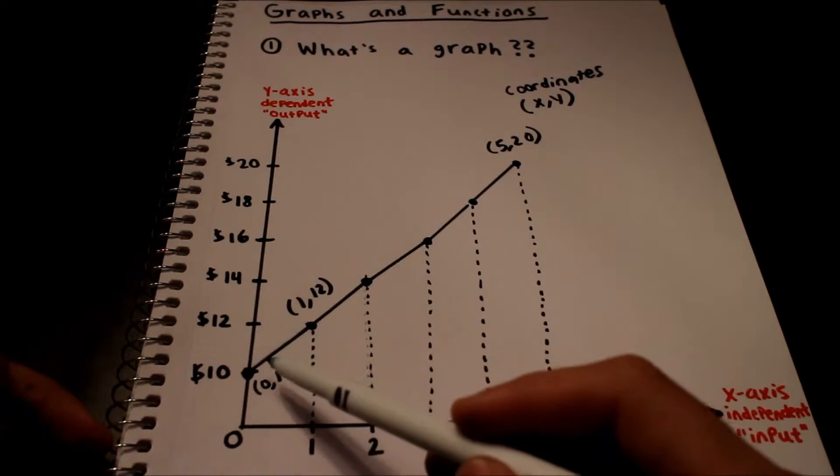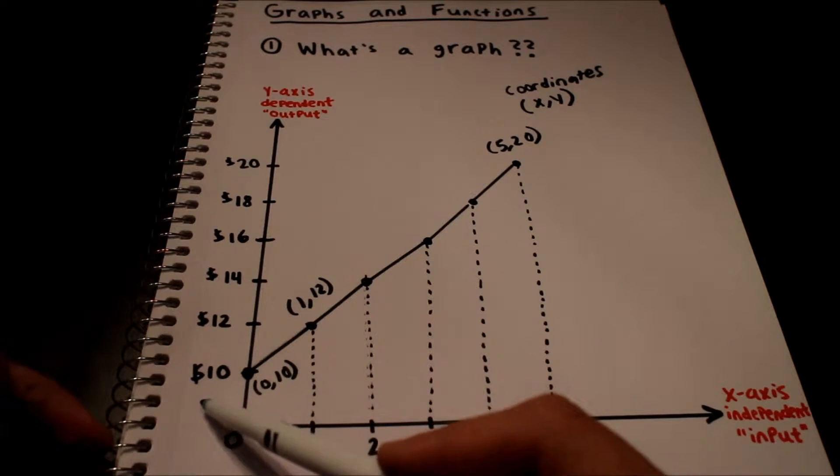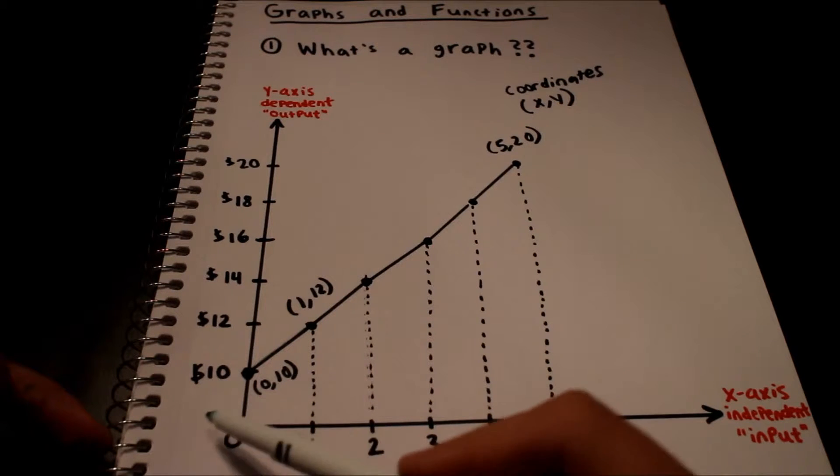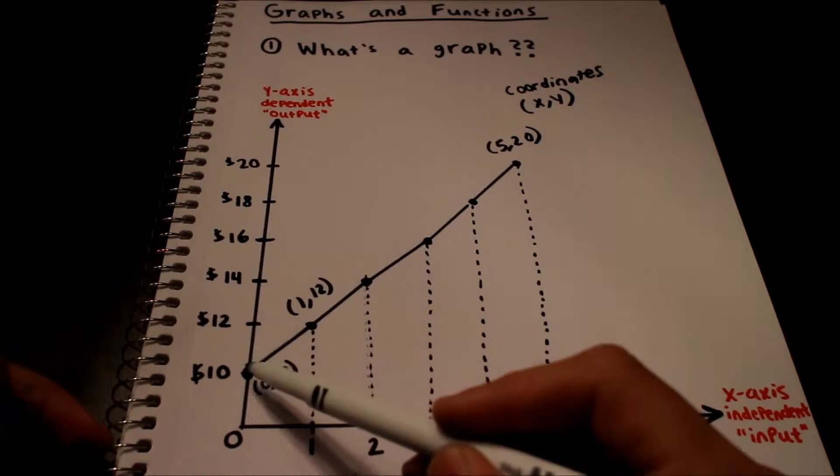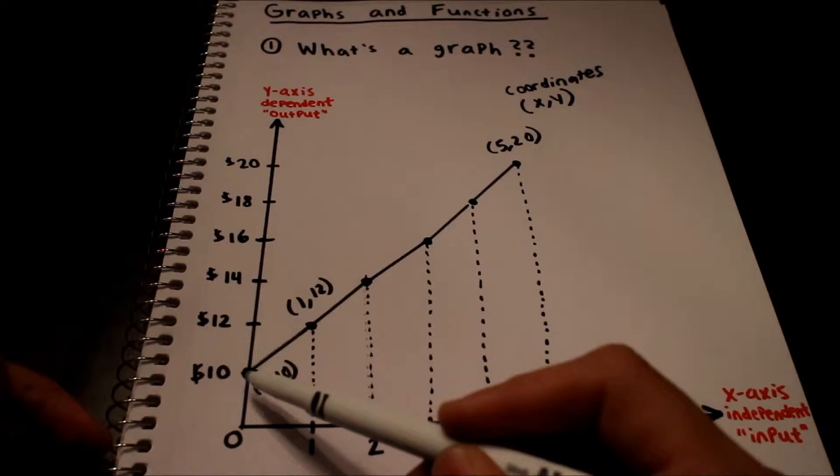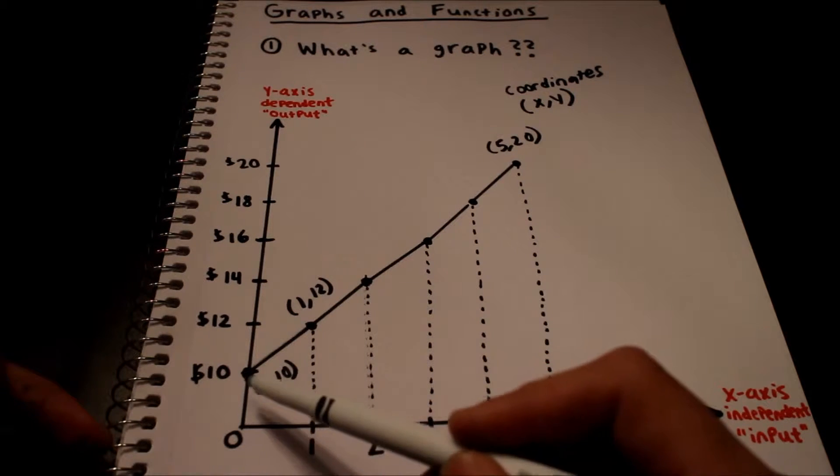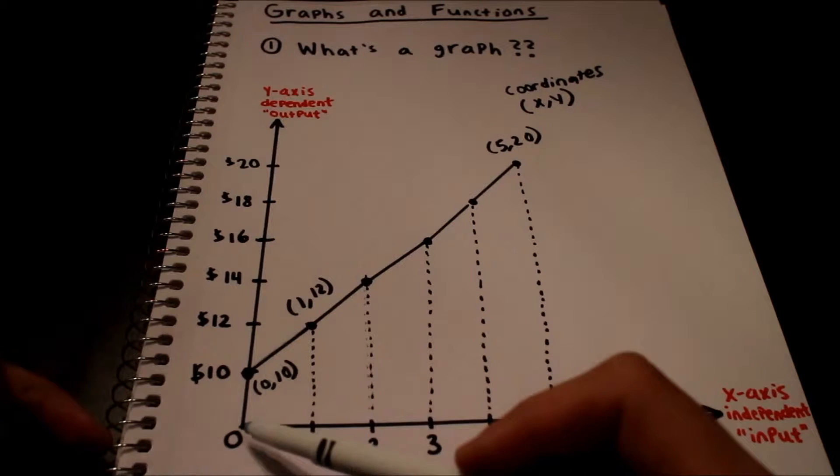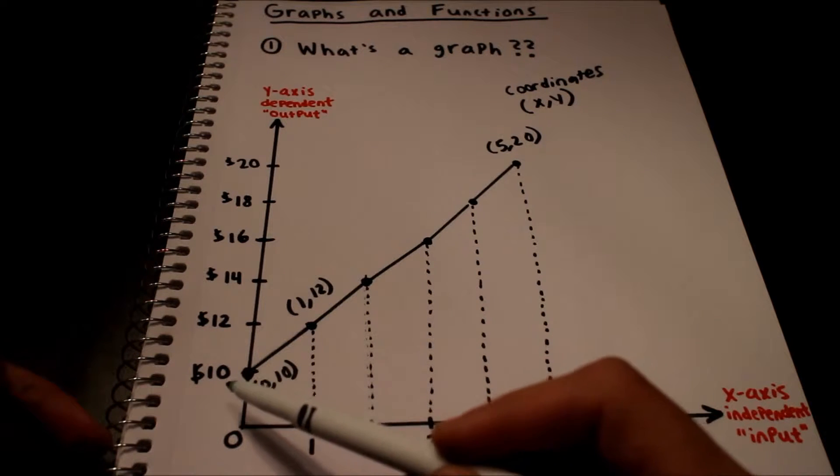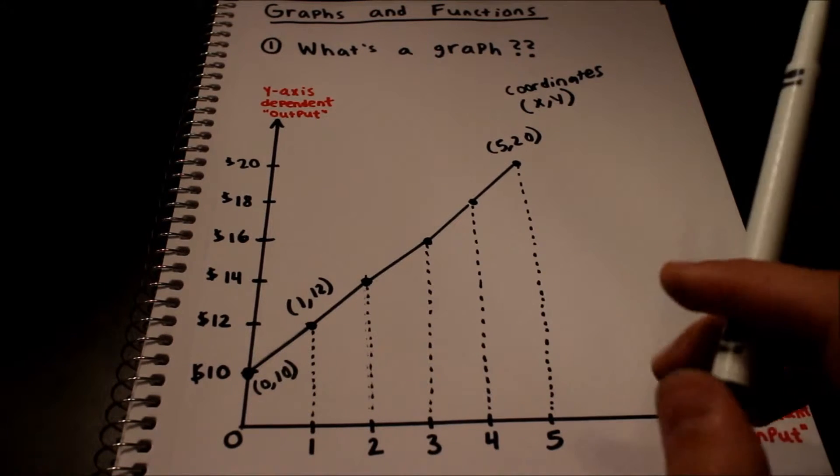Wherever X equals 0, that's going to be your Y intercept, wherever the line crosses the Y axis. Conversely, your X intercept - if we kept on drawing this line it would continue out back here but I didn't draw it. But the X intercept is wherever the Y value is 0, whatever X value the graph touches the X axis at, which is basically where the Y value equals 0.